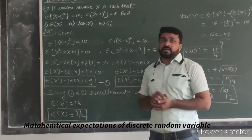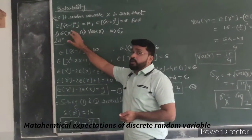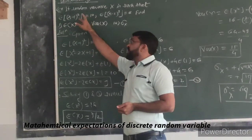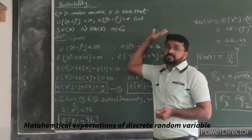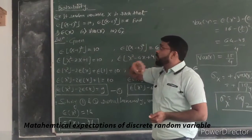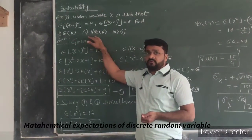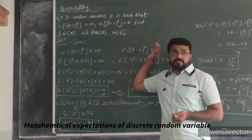If random variable X is such that the expected value of (X minus 1) whole square is given as 10 and the expected value of (X minus 2) whole square is given as 6, let us find E(X), variance of X, and the standard deviation sigma X.